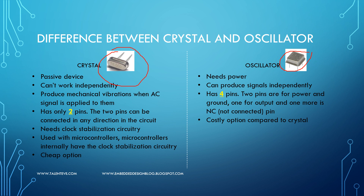There is an additional circuit required with the crystal to generate a frequency, whereas an oscillator has an inbuilt crystal and doesn't require any additional circuitry except power to generate the required oscillations or clock. This crystal requires clock stabilization circuitry, which could be inside a microcontroller or any other device.